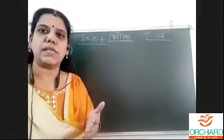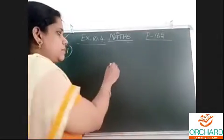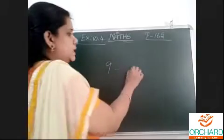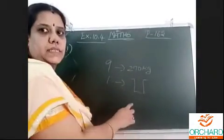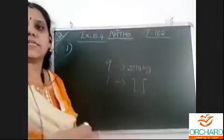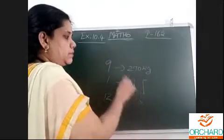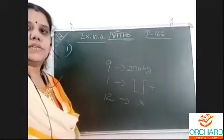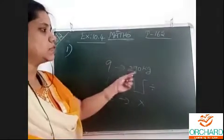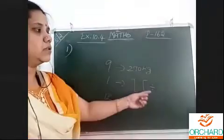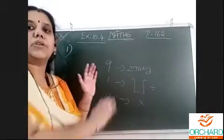9 bags of rice contains this much; 1 bag of rice, how much? More is given, less is asked. First we do division — from 9 bags of 270 kg, we come to 1 bag. Then from 1 bag, they are asking 12 bags. From 1 to many, we do multiplication. From 9 to 1 we do division. So from 9 bags, 1 bag means 270 divided by 9 = 30. Then 12 bags: 12 × 30 = 360. That is one way of doing it.